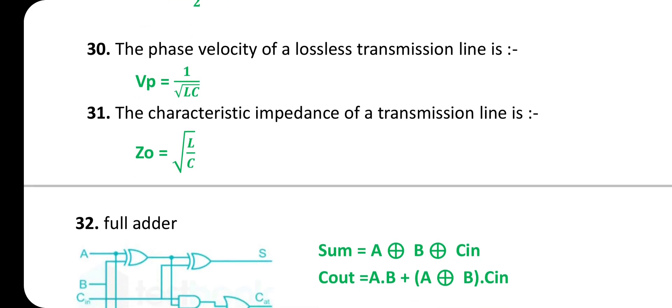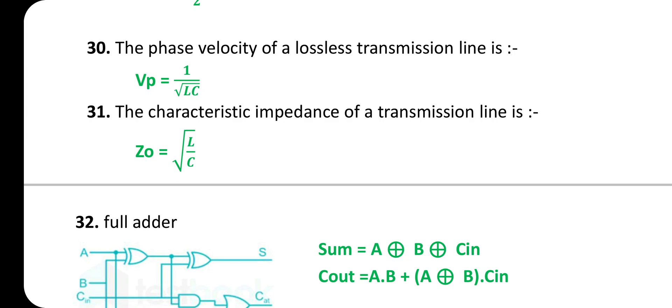The phase velocity of a lossless transmission line: v_p = 1 / √(LC). The characteristic impedance of a transmission line: Z₀ = √(L/C).